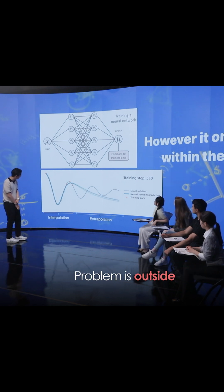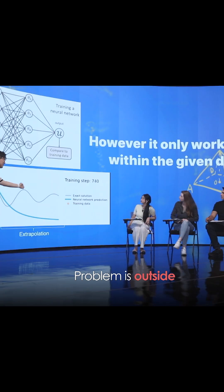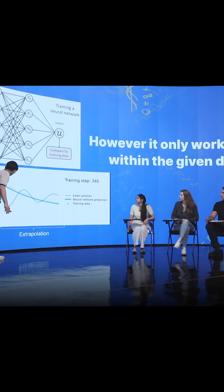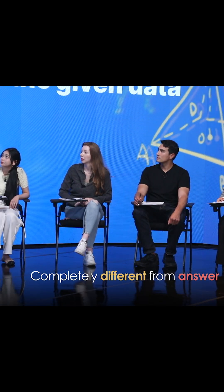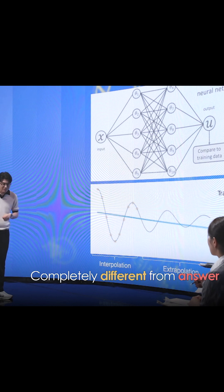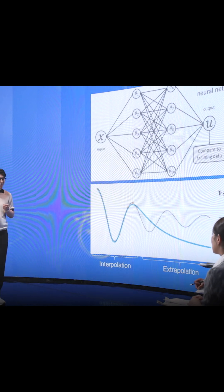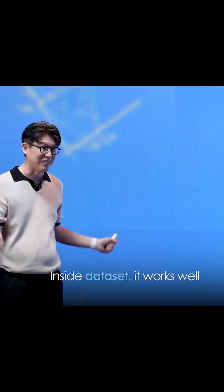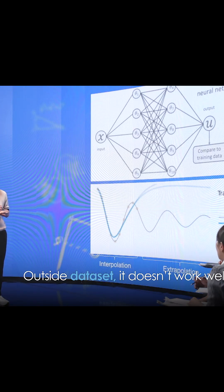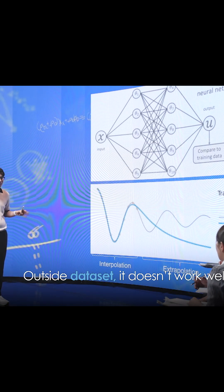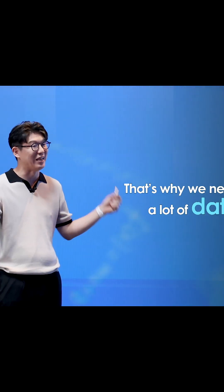but the problem is outside. This side has no data set. In that case, what happens? It's completely different from the answer. So that's the problem of AI — for the inside of the data set it works very well, but outside of the data set it doesn't work. That's why we need a lot of data.